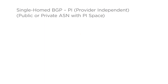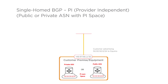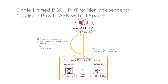Single-homed BGP PI (provider independent) — public or private ASN with PI space. Most common for backup or secondary internet access. This customer has their own PI space; the customer's own subnet has to be greater than or equal to /24. They either have their own public ASN or are using a private ASN with an LOA assigned by Equinix. Equinix provides an IPv4 /30 or IPv6 /126 for configuration. BGP policy is used to select default routes, full routes, or default plus full routes.